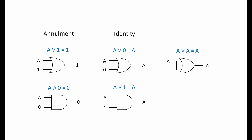Take a look at this arrangement. Both inputs of the OR gate are always the same. If A is 1, both inputs will be 1, so the output will be 1. If input A is 0, both inputs will be 0, so the output will also be 0. In the same way, if both inputs of an AND gate are always the same, then the output of the gate will match. This is known as the idempotent law: an input ORed with itself results in an output equal to that input, and an input ANDed with itself also results in an output equal to the input.